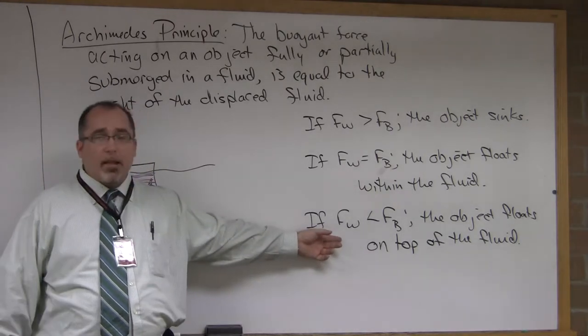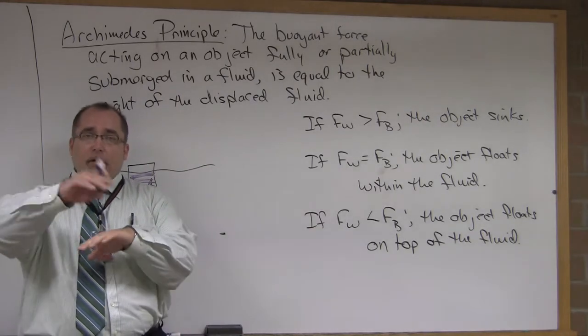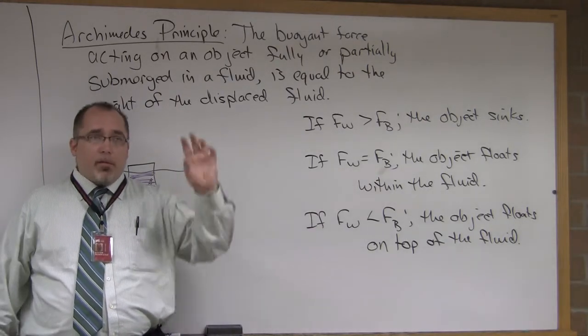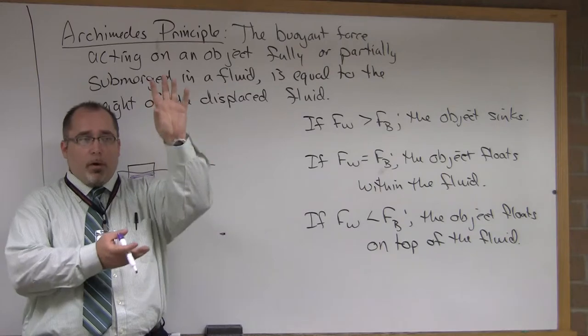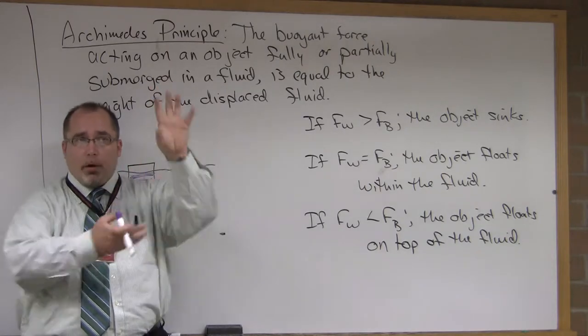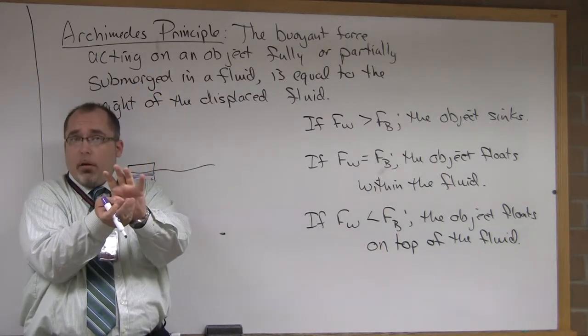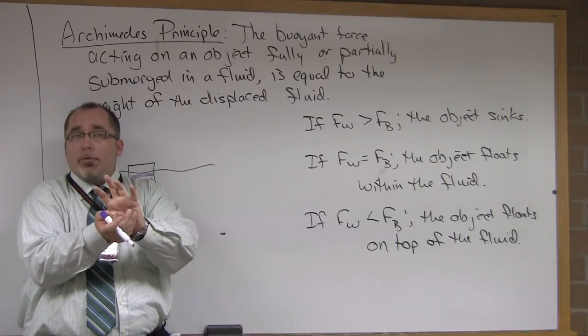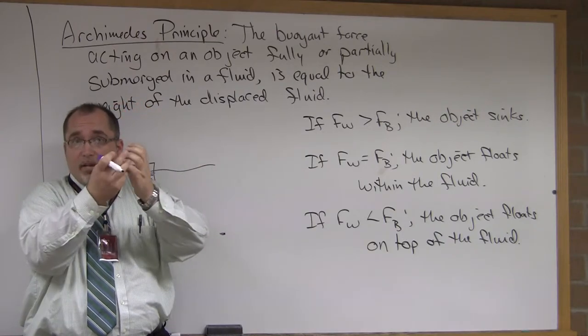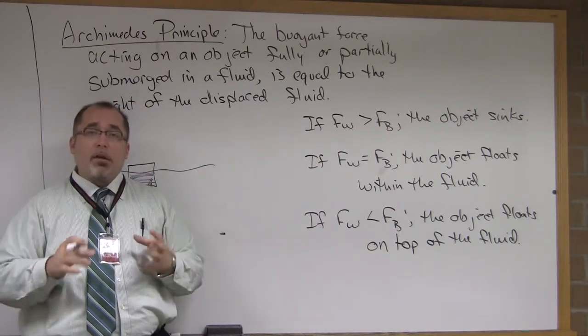And lastly, if the weight is less than the buoyant force, the object floats on top of the fluid. Think of a ping-pong ball in water. A ping-pong ball doesn't break the surface tension in the water. It floats completely on top of it. So therefore that's an example of an object whose weight is less than the buoyant force of what it's displacing.